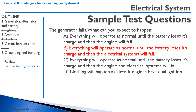Option C: everything operates normally until the battery loses its charge, then the engine and electrical systems fail. No — we already discussed the engine won't fail. Option D: nothing will happen as the aircraft has dual ignition. The aircraft does have dual ignition, but that has nothing to do with the electrical system — that has to do with the ignition system. That concludes this lesson on the electrical system. Thanks for joining me; we'll talk in our next lesson.